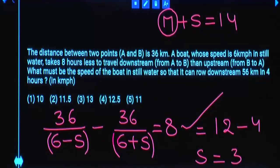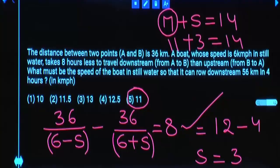If S equals 3, then 3 plus which number gives 14? The answer is 11. So the speed of the boat in still water is 11 km per hour.